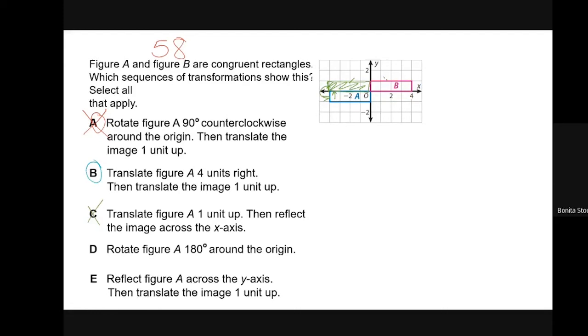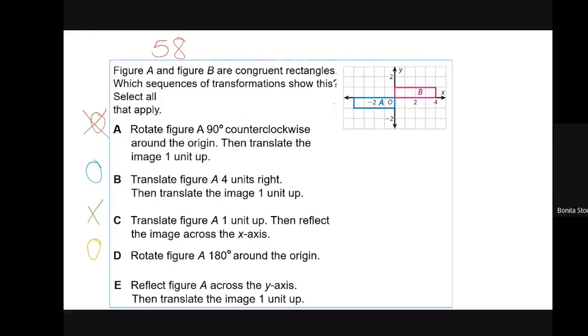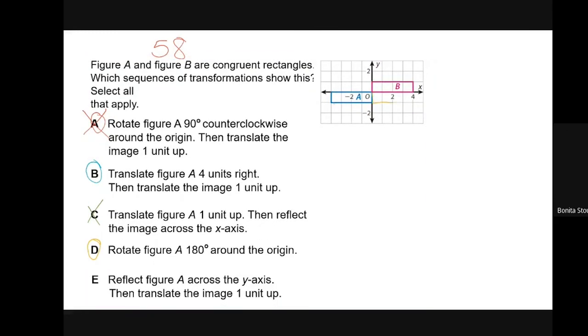Rotate figure A 180 degrees about the origin. If I rotate it 180 degrees about the origin, this point stays the same and then this point is going to rotate up to here. And yes, that one does work. And E, reflect A across the y-axis, which is going to give me this icky olive color. That's across the y-axis. And then if I move it up one unit, I do take that one and put it in B. So there are multiple ways that I could have got there. And C would have worked if I would have changed this x-axis to a y-axis.